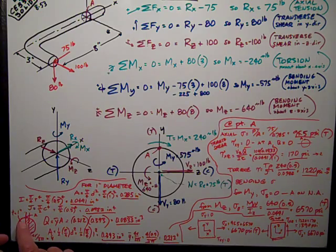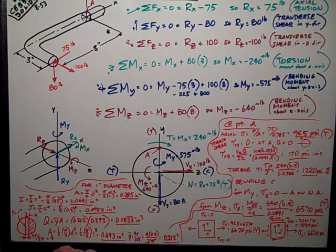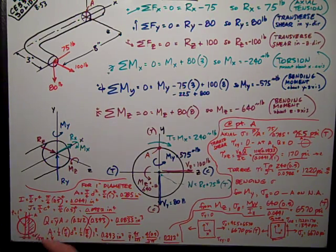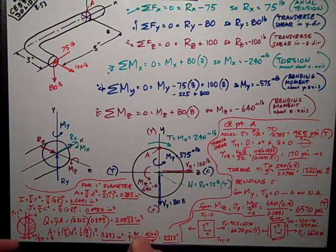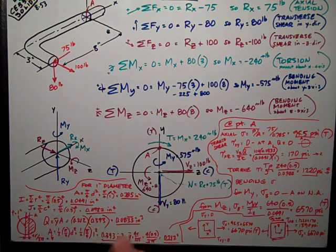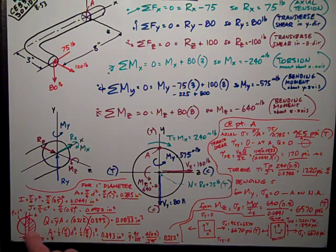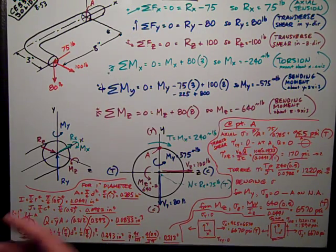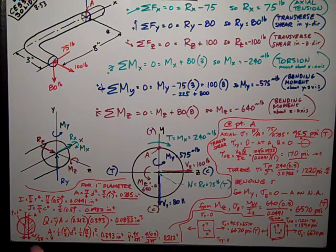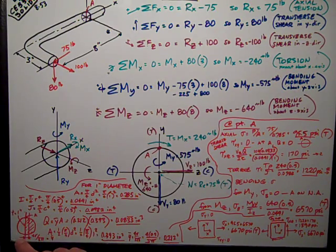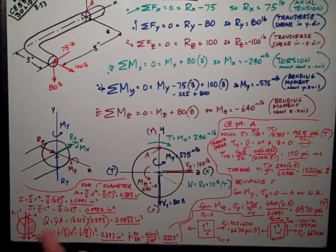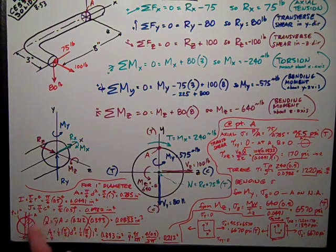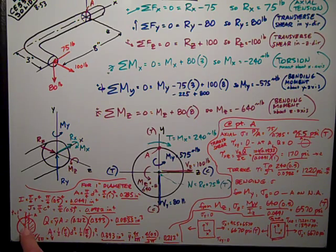Point A is going to have the maximum amount of transverse shear for the force VZ, the reaction, the shear in the Z direction. Q is the area away from the neutral axis. In this case, A lies on the neutral axis, times the area away from the neutral axis at the point where you're trying to figure the stress.